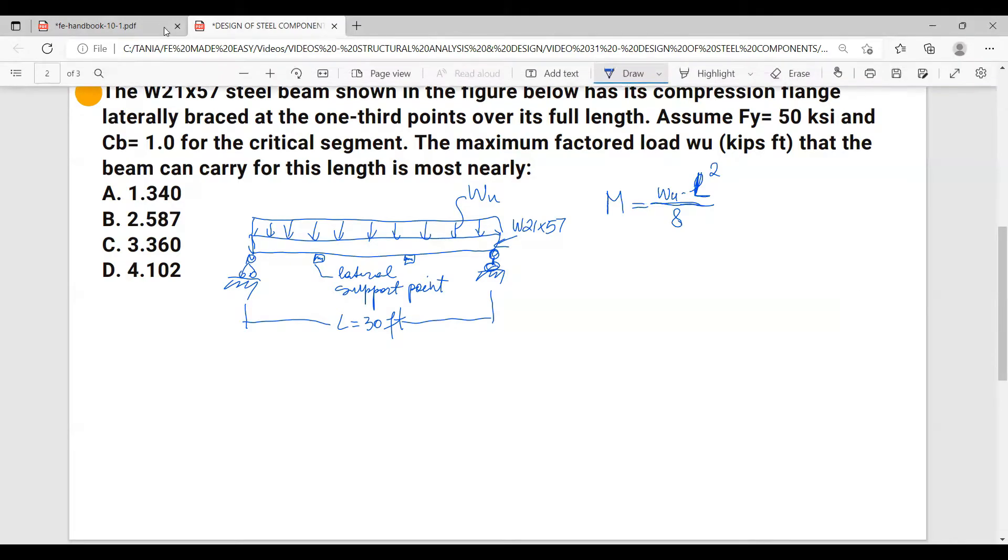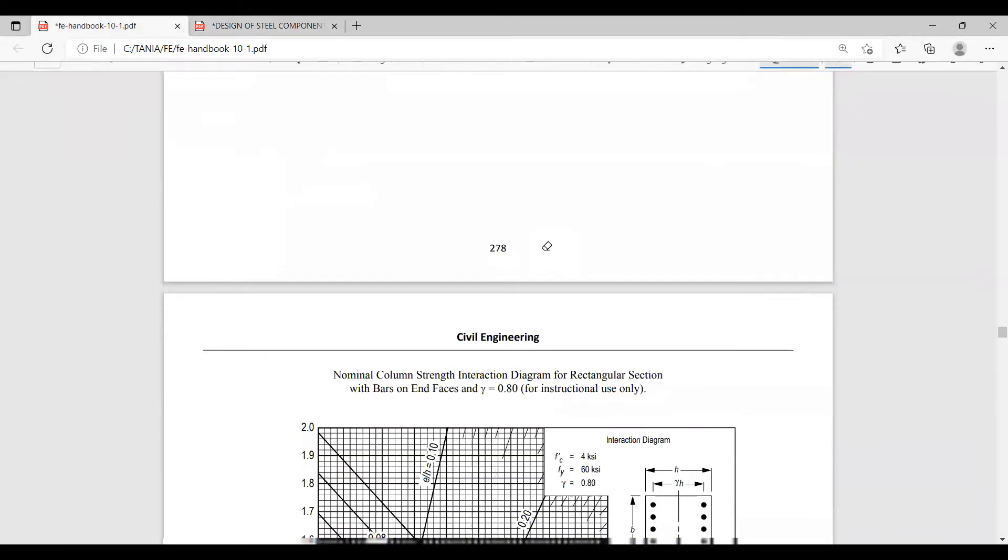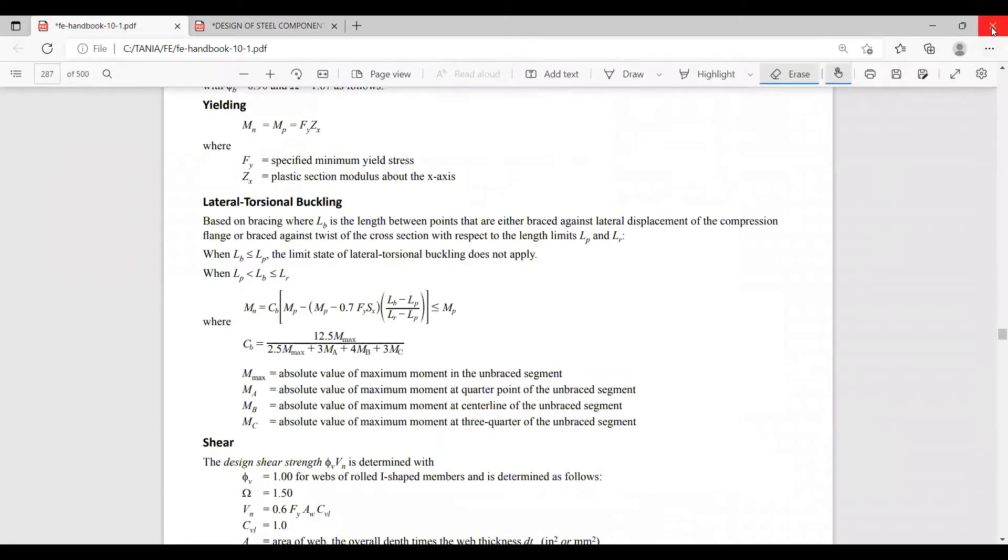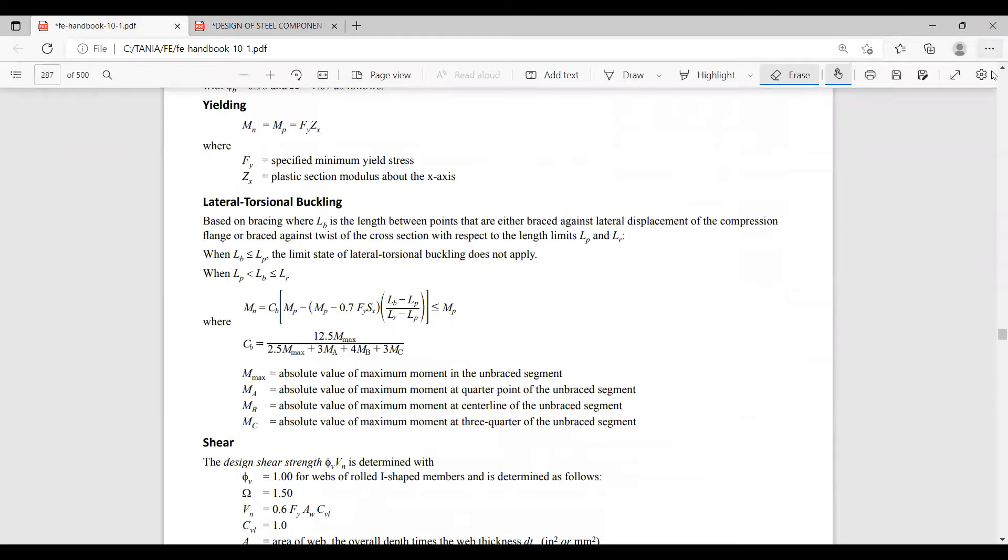Let's go to the FE handbook. We are on the civil engineering section and I will keep going downwards to get to steel design of steel components.